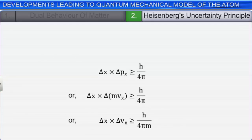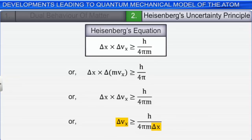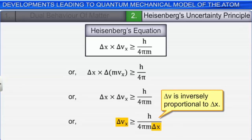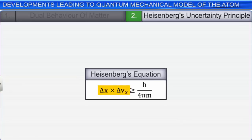This equation can also be expressed in terms of mass and velocity of the particle. Note that the uncertainty in the position and velocity are inversely proportional to each other. This means that if the position of the electron is known with a high degree of accuracy, then the velocity of the electron will be uncertain, and vice versa. Also note that the uncertainty in position and velocity are inversely proportional to the mass of the object — that is, uncertainty decreases as the mass of the object increases, and vice versa.